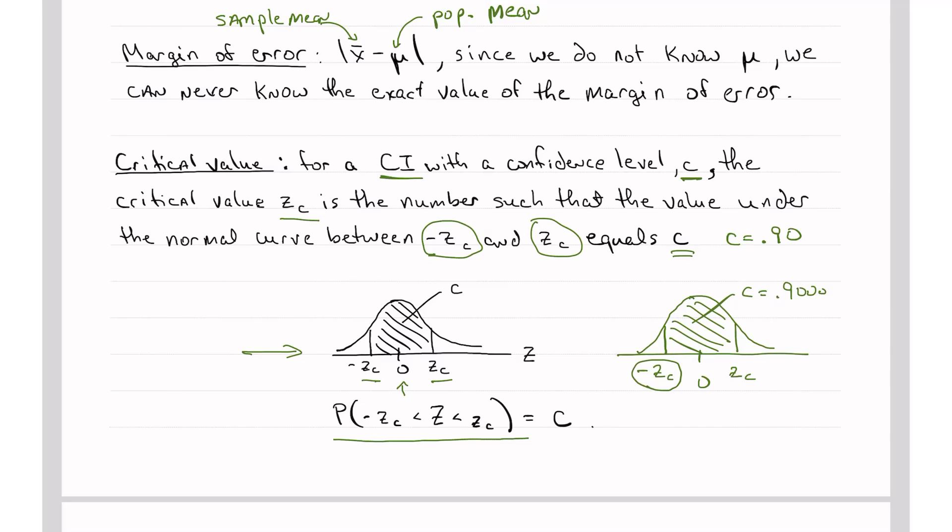Now, in order to look up negative Z sub C in my table, I need to know this area here. If I know this area here, I can look that area or probability up in the table and find negative Z sub C directly. So how do I get that? Well, I'm going to take 1 minus 0.9, which is going to give me 0.1. That's the total area in both of these tails where it's not shaded. Since negative Z sub C is the same distance away from the mean zero as positive Z sub C, these two areas in the tails are going to be the same. So I'm going to divide this by 2. 0.1 divided by 2 equals 0.0500. So this is 0.0500.